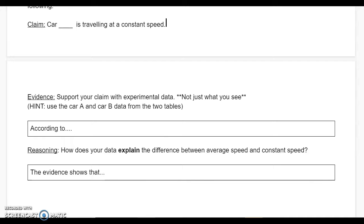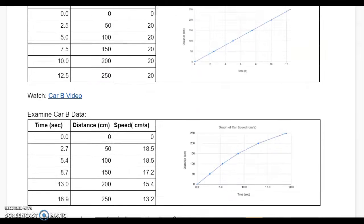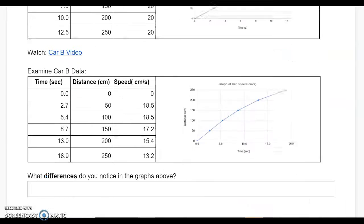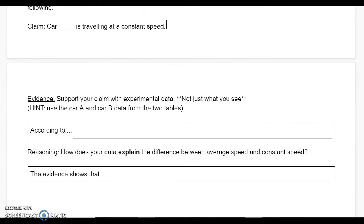You're going to include evidence for why you believe the car you chose is traveling at constant speed. Your evidence should come from one or both of these data charts. And then finally, you're going to explain how your evidence shows that the car you picked is traveling at constant speed. Your evidence and reasoning should both be in full and complete sentences.